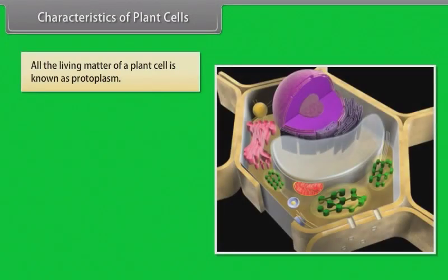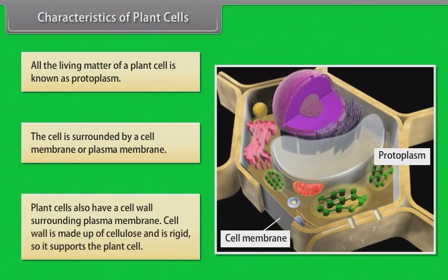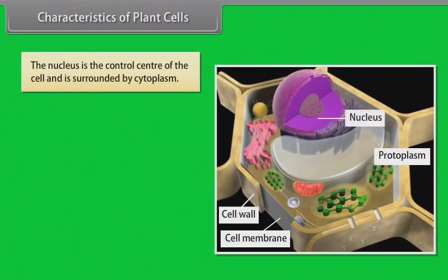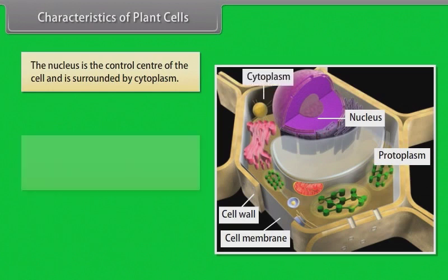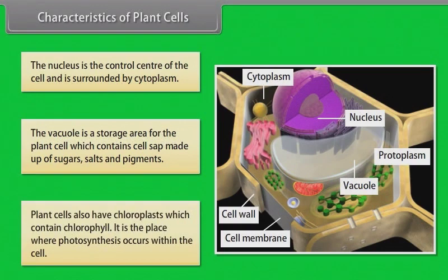Characteristics of plant cells: All the living matter of a plant cell is known as protoplasm. The cell is surrounded by a cell membrane or plasma membrane. Plant cells also have a cell wall surrounding the plasma membrane. The cell wall is made up of cellulose and is rigid, so it supports the plant cell. The nucleus is the control center of the cell and is surrounded by cytoplasm. The vacuole is a storage area containing cell sap made up of sugars, salts, and pigments. Plant cells also have chloroplasts which contain chlorophyll — the site where photosynthesis occurs.